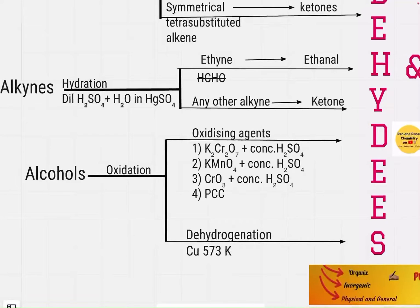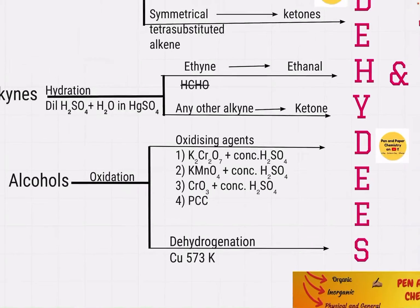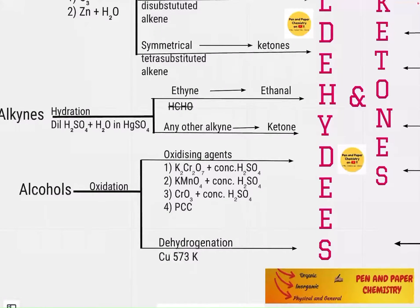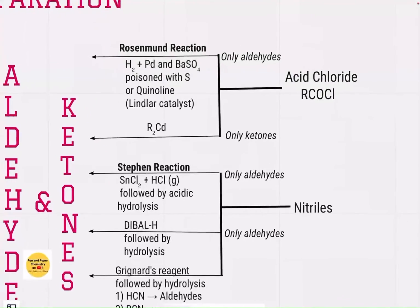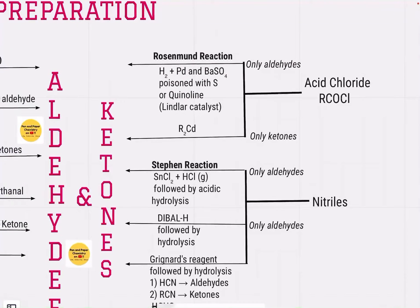Alcohols can be converted to aldehydes and ketones by removing hydrogen or adding oxygen — basically oxidation. When you say oxidation, we can either do it by oxidizing agents, listed in the flowchart, or by dehydrogenation, that is removal of hydrogen. Acid chlorides can be converted to aldehydes by the Rosenmund reaction, where you reduce it with hydrogen in the presence of palladium sulfate.